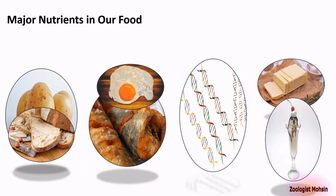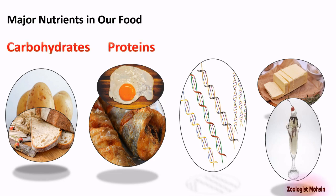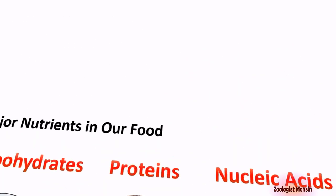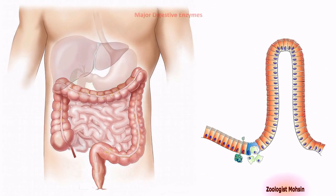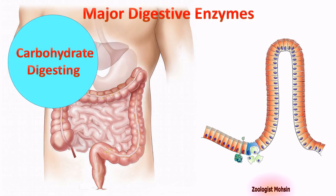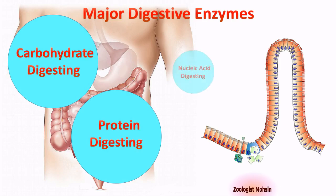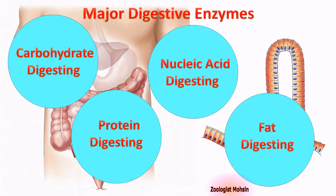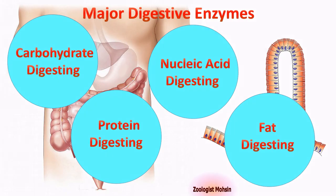The major nutrients in our food are carbohydrates, proteins, nucleic acids, and fats. To digest these nutrients, we have major enzymes: carbohydrate-digesting enzymes, protein-digesting enzymes, nucleic acid-digesting enzymes, and fat-digesting enzymes.